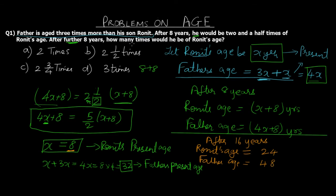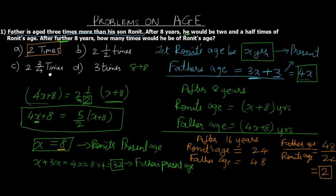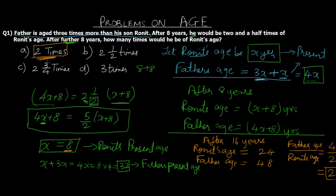They are asking how many times older the father would be compared to Ronit. So we take the ratio: father's age upon Ronit's age equals 48 by 24, which gives us 2. So after 16 years, the father is going to be twice the age of Ronit. The answer is 2 times, which is the correct option. That was question number 1.